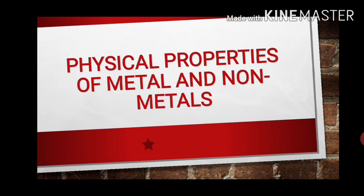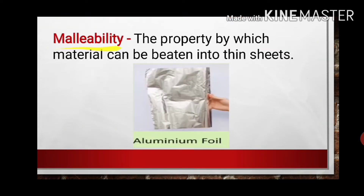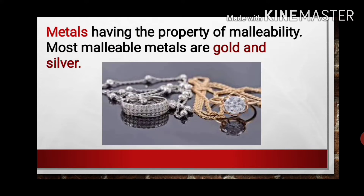The first physical property is malleability. Malleability is a property by which materials can be beaten into thin sheets. As you can see in the figure of aluminum foil, the aluminum material is beaten into the form of thin sheets — this property is called malleability. Using this property to distinguish metals and non-metals: since aluminum is a metal, we can easily conclude that metals have the property of malleability.